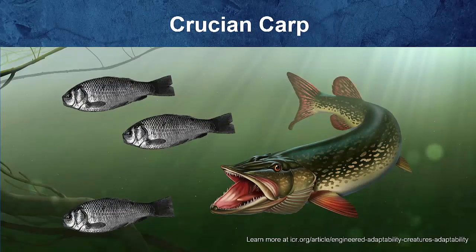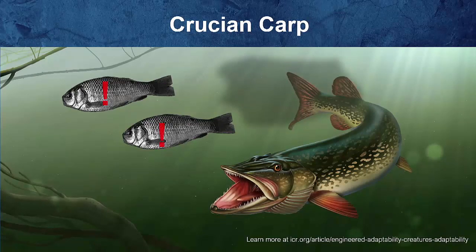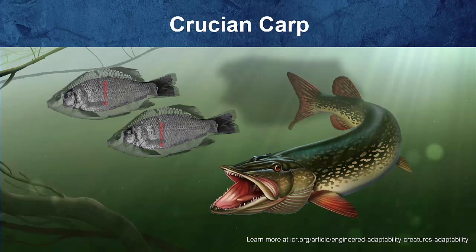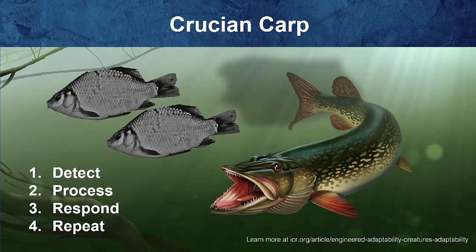This is my favorite — the Crucian carp. Northern pike love to eat them. What's interesting is that as a carp passes through the pike's digestive system into the water, the other carp detect this, and within 24 hours they begin to change shape, making them harder to eat. This is incredible because these are adult fish, not eggs. So the pike will have to eat the carp when they're younger, or find another source of food. Detect, process, respond, repeat.